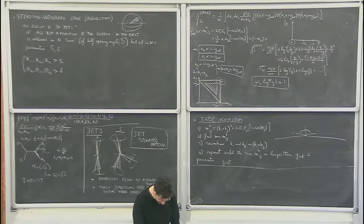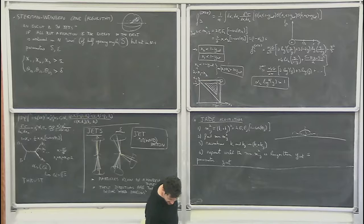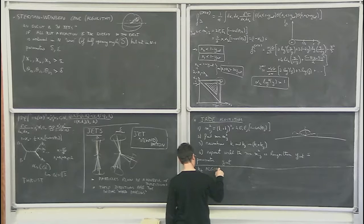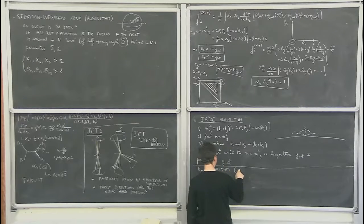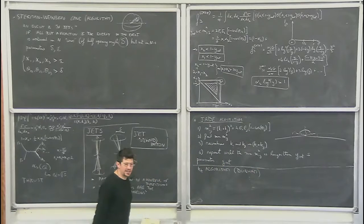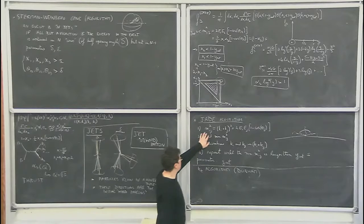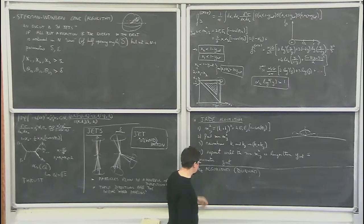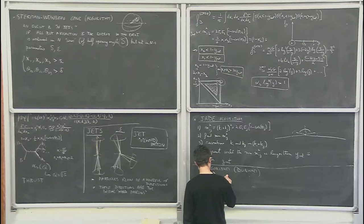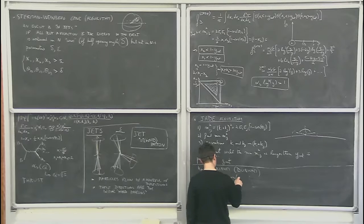This problem comes from the fact that you have two factors of energy in the invariant mass m_{ij}², so two soft particles give two small factors — making their mutual mass artificially small. The fix is to get something linear instead of quadratic in the energies, which is the idea behind the K_T algorithm, also known as the Durham algorithm.